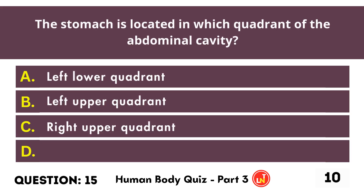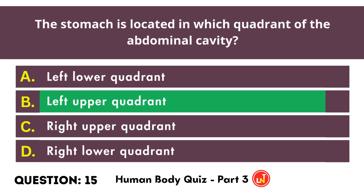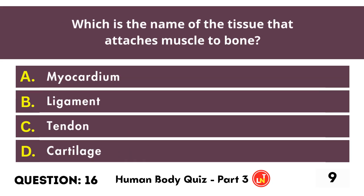The stomach is located in which quadrant of the abdominal cavity? Left upper quadrant. Which is the name of the tissue that attaches muscle to bone?